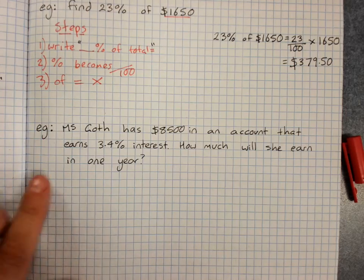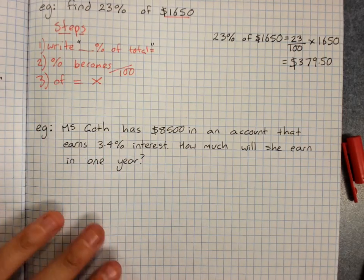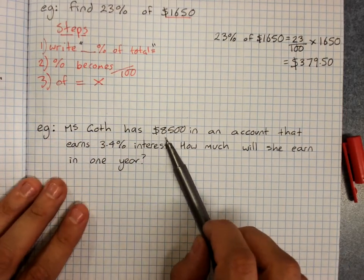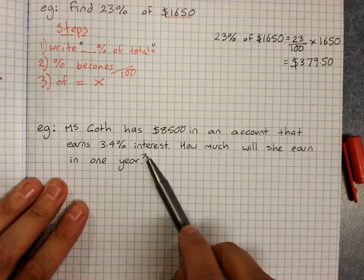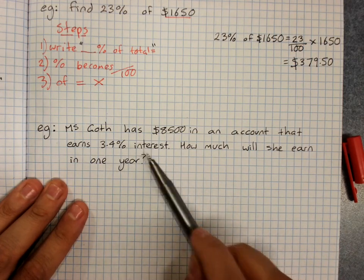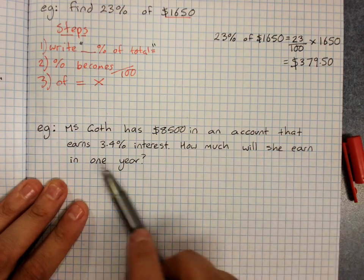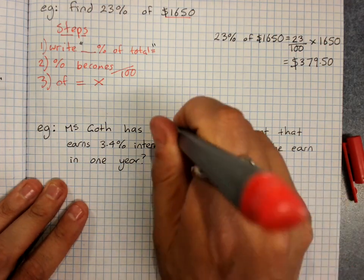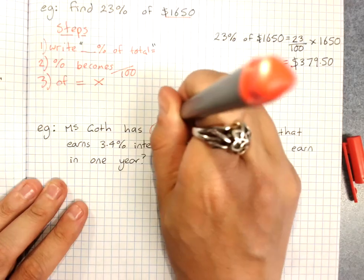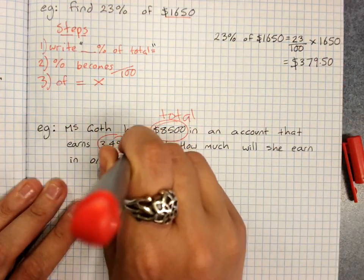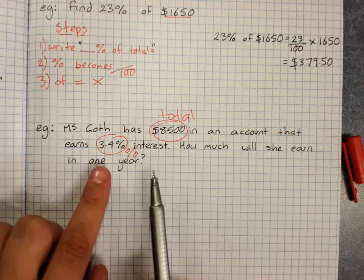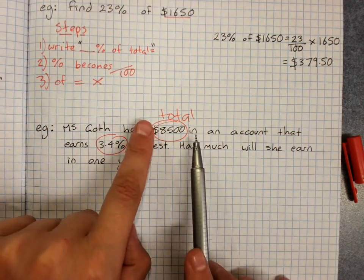So let's use that method here. Ms. Gough has $8500 in an account that earns 3.4% interest and that's in one year. So how much will she earn in one year? So this is our total and this is our percentage and we want to find this percent of this total.